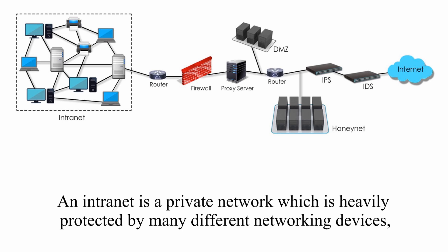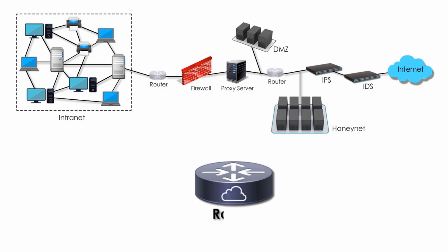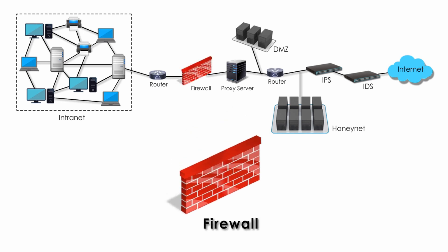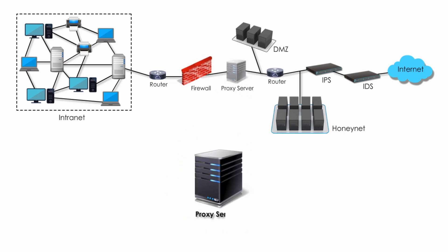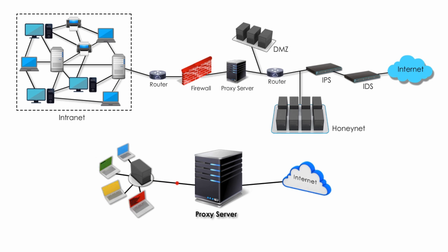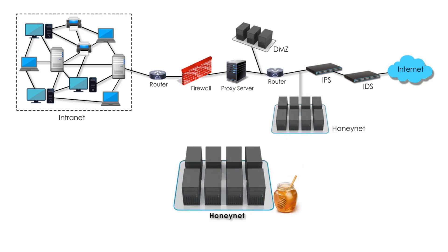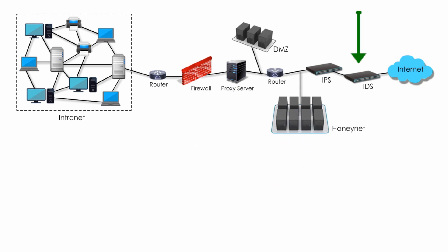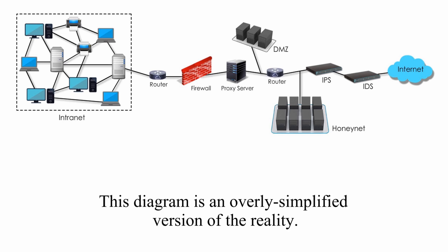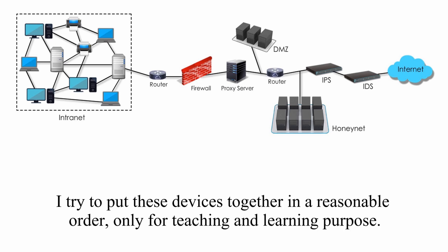An intranet is a private network which is heavily protected by many different networking devices such as router, firewall, proxy server, DMZ, HoneyNet, IPS, and IDS. This diagram is an overly simplified version of the reality. I try to put these devices together in a reasonable order, only for teaching and learning purposes.